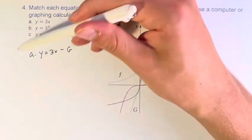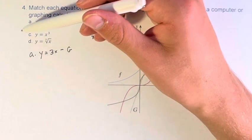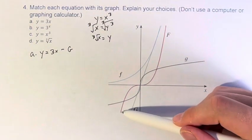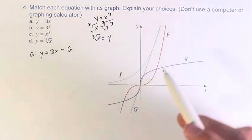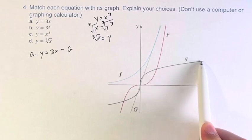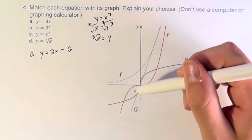So therefore these will have the same shape just at different orientations. And if we see f has this general shape and g has this general shape, these are inverses of each other.